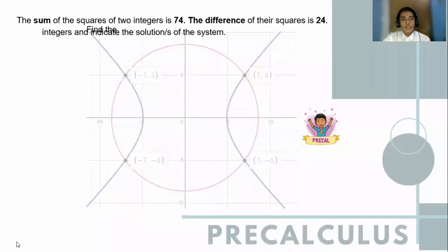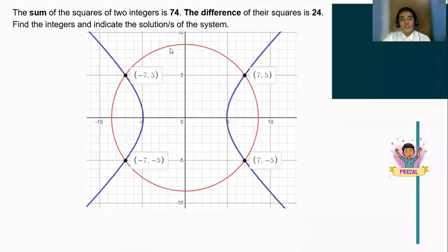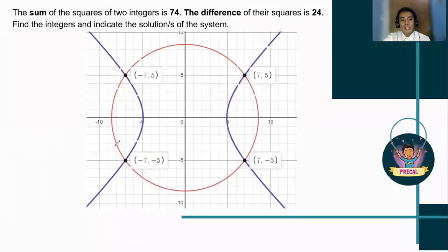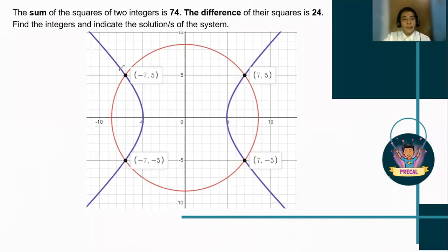The graphical solution shows the four intersection points located in all four quadrants — the intersections of the red circle and the violet hyperbola, with branches to the left and right.